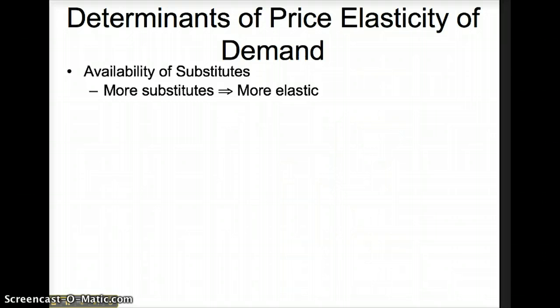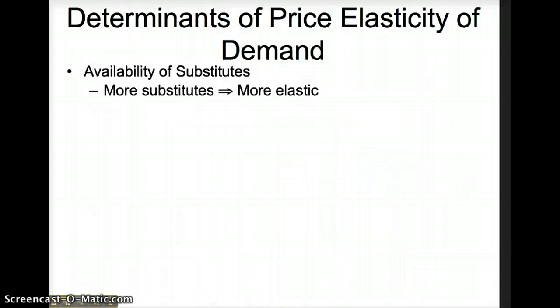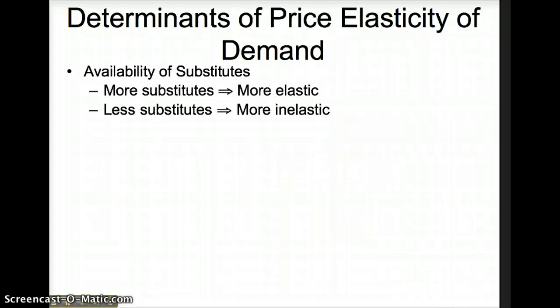Think of running shoes. If the price of Nikes goes up, consumers will be responsive — they won't buy Nikes; instead they'll buy a pair of New Balances or Adidas or Pumas or Reeboks. If there are fewer substitutes available, demand is more inelastic.